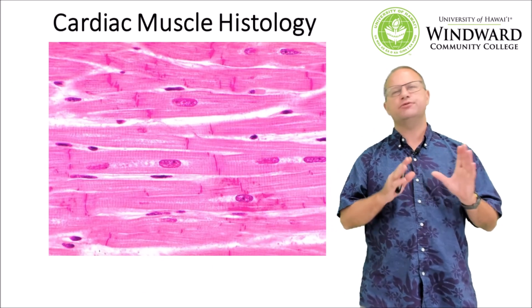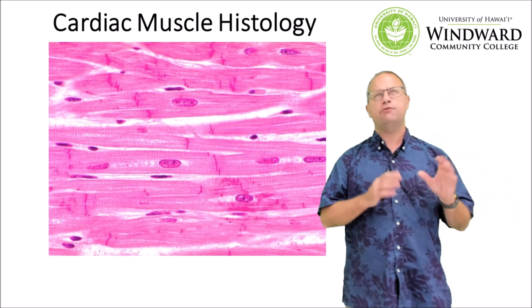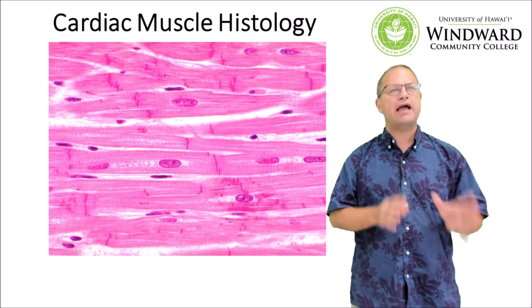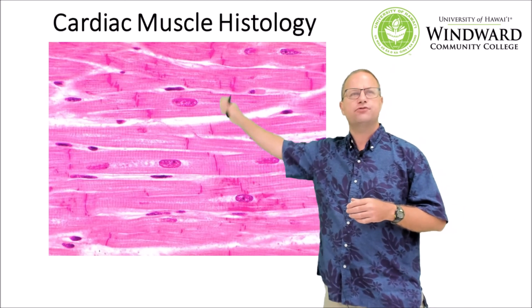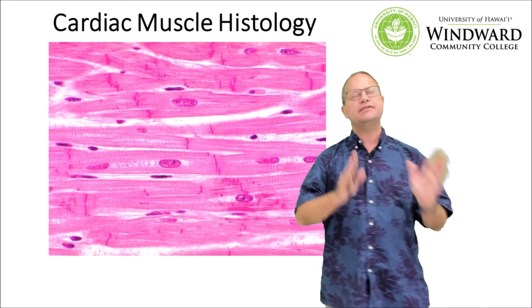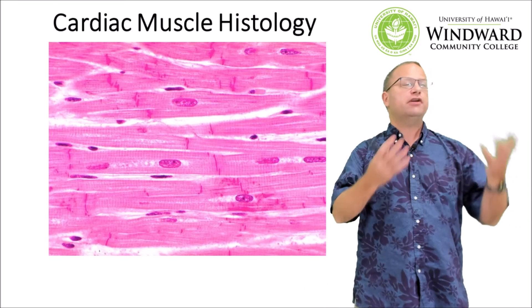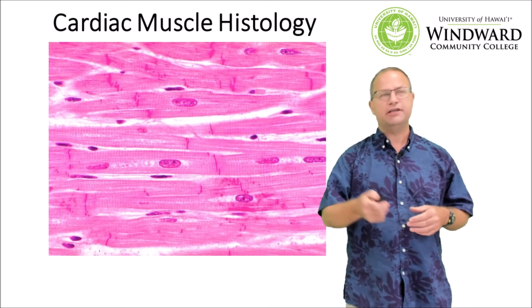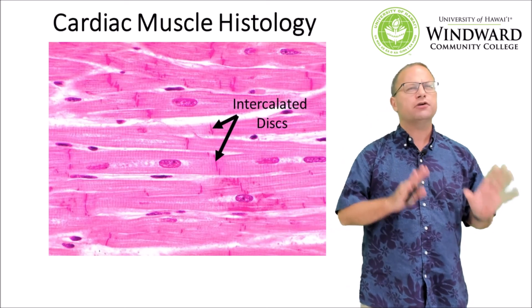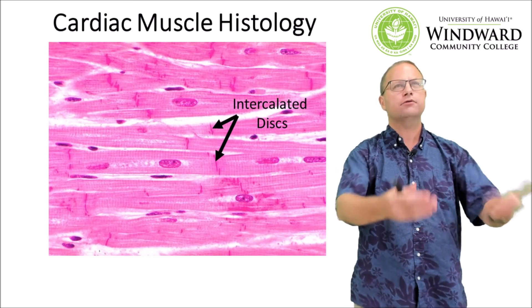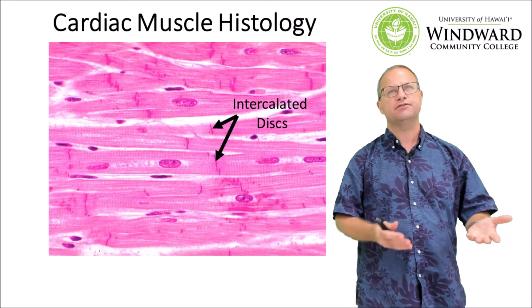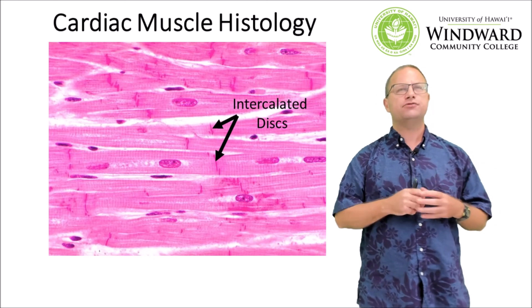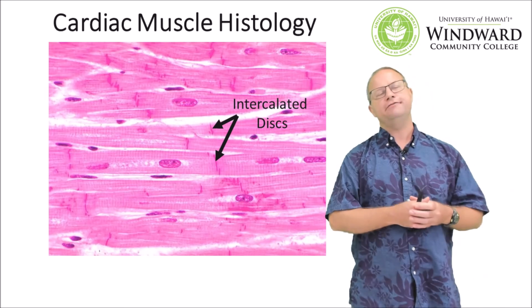Finally, let's go through a little cardiac muscle histology. Cardiac muscle is involuntary and striated, just like skeletal muscle — we'll see striations in there. Unlike skeletal muscle, cardiac muscle cells generally have only one nucleus per cell. The cells are separated by intercalated discs, which allow electrical communication between adjacent cells. This is very important in cardiac muscle because we need synchronized contraction in order to have systole and pump blood efficiently.